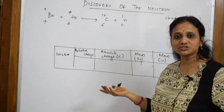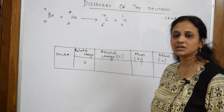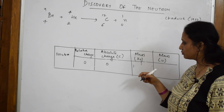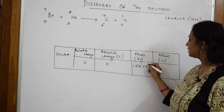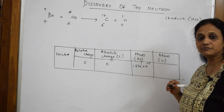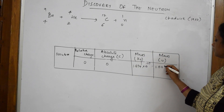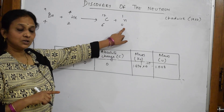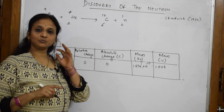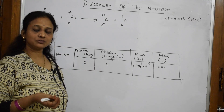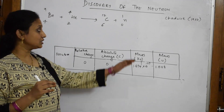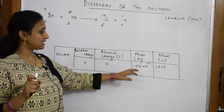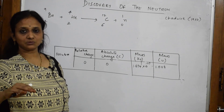Let us define the neutron and write its values. The relative charge of a neutron is zero — it is neutral in nature. Its absolute charge is also zero. The mass of a neutron is 1.674 × 10⁻²⁷ kg, or approximately 1.008 amu. Neutron is a subatomic particle found in every atom with no charge and a mass approximately equal to that of a hydrogen atom.